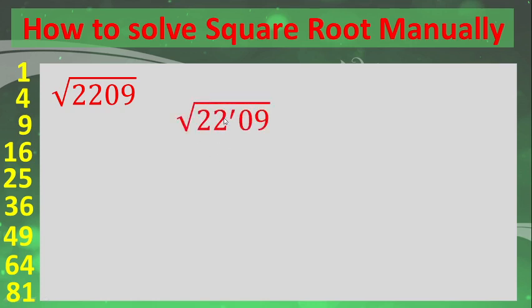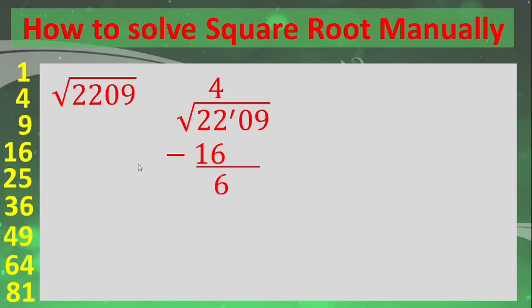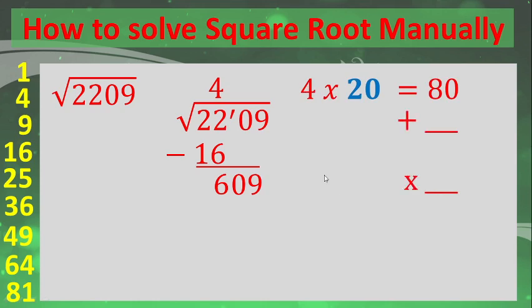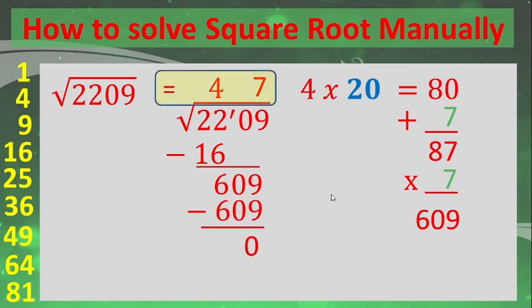Let's try a bigger number — the square root of 2229. Step one: group by twos to get 22 and 29. The square root of 22 uses the square root of 16, which is 4. So 4 times 4 is 16; subtract: 22 minus 16 is 6. Bring down 09 giving 609. Now 4 times 20 is 80. You need a number that ends in 9 when multiplied by itself: choices are 3 (3×3=9), 7 (7×7=49), or 9 (9×9=81). Here it's 7: 80 plus 7 is 87, and 87 times 7 is 609. Therefore the square root of 2229 is 47.